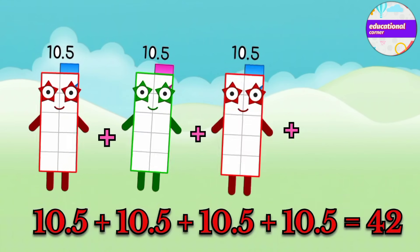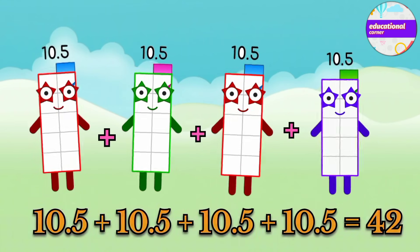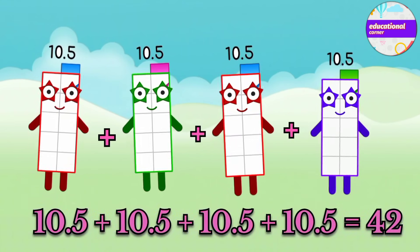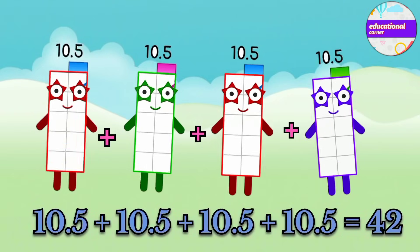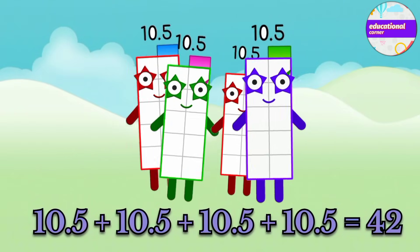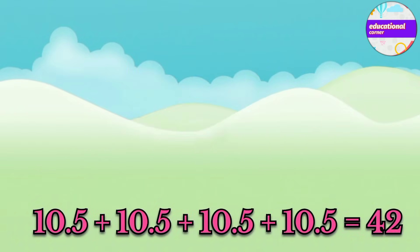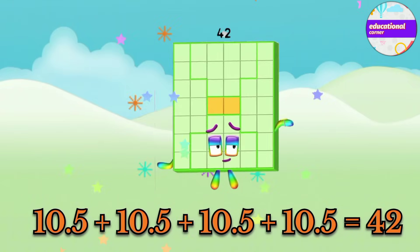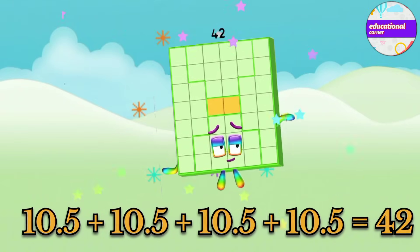10.5 plus 10.5 plus 10.5 plus 10.5 equals 42.